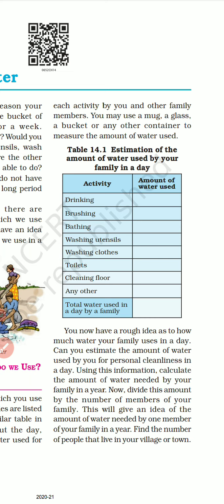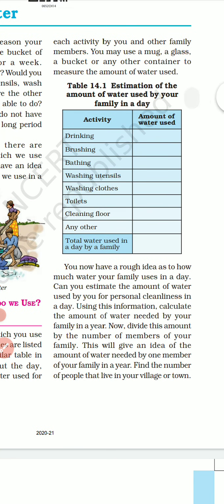For example: drinking - three bottles, four liters. Similarly record amounts for brushing, bathing, washing utensils, washing clothes, toilet, cleaning floors, and any other use. If anything is missing you can add it. Increase the number of columns as needed, then write down the total water used in a day by the family.